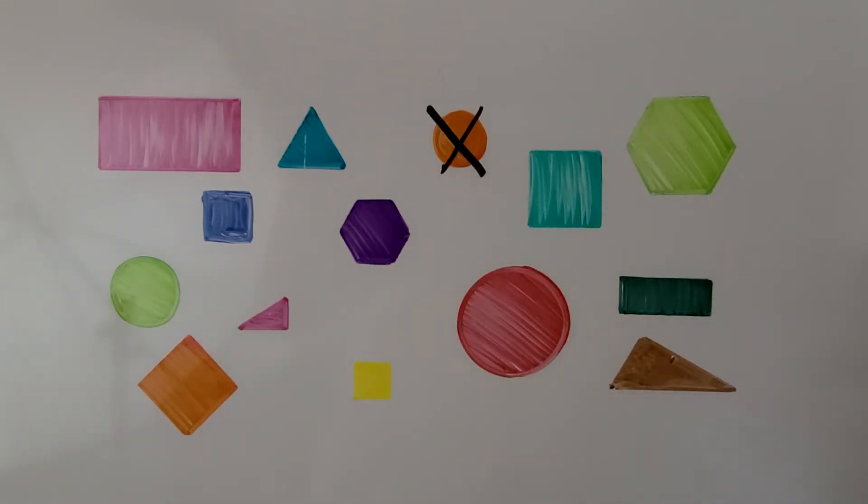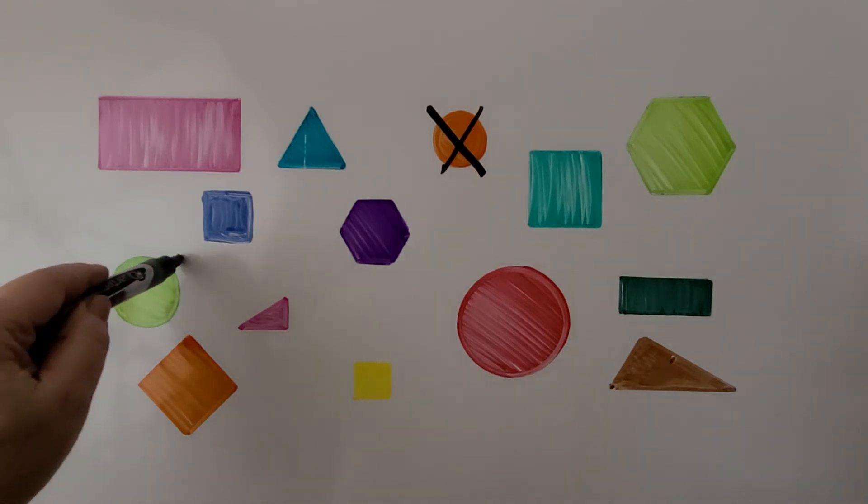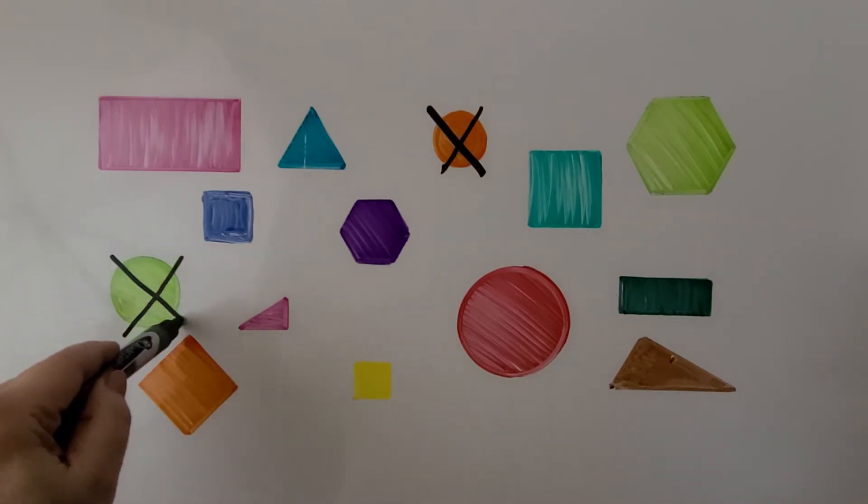Do you see another circle? Here's a circle. It's round and flat. We can put an X on this one.